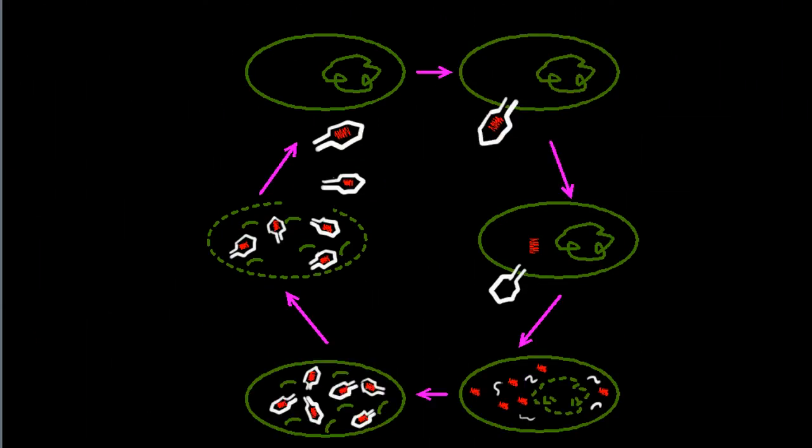Here's the lytic stage. We have the cell, which is here in green, and the bacteriophage. The bacteriophage attaches to the cell and then injects its genetic material.